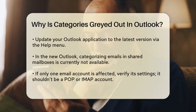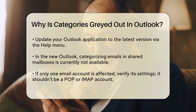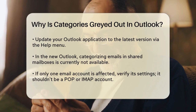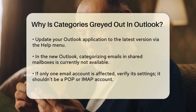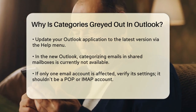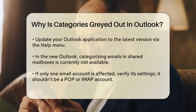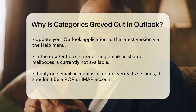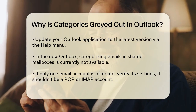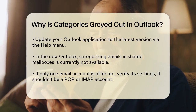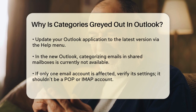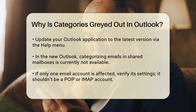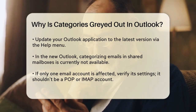If you're using shared mailboxes, there's a specific issue you should know about. In the new Outlook, categorizing emails in shared mailboxes is not currently available. This means that even if you've been using categories in shared inboxes before, the option might now be grayed out and unclickable.